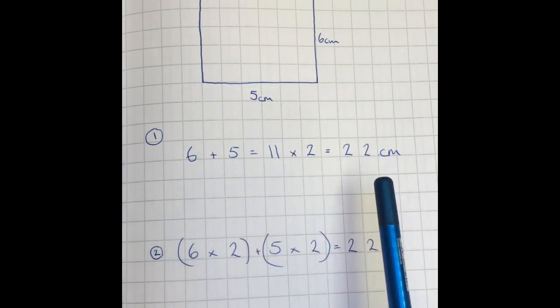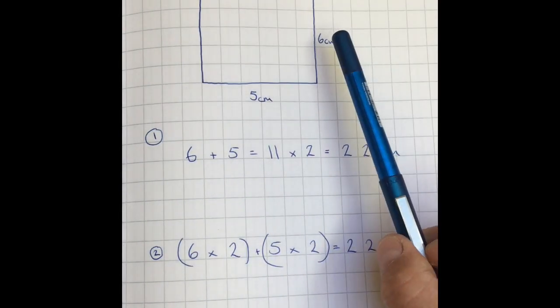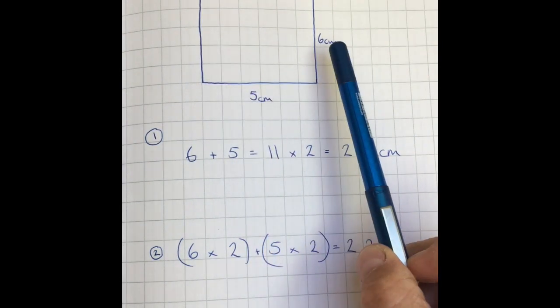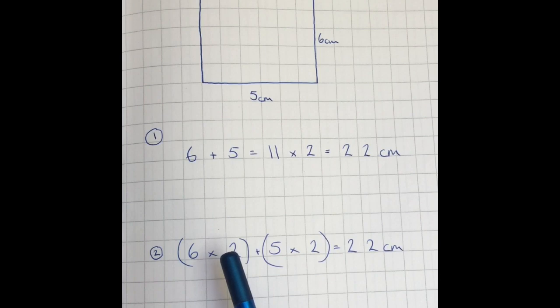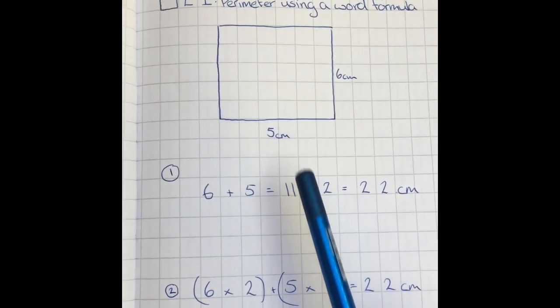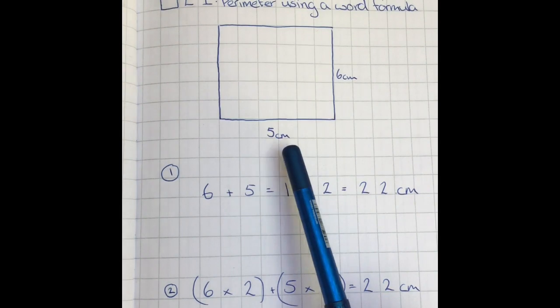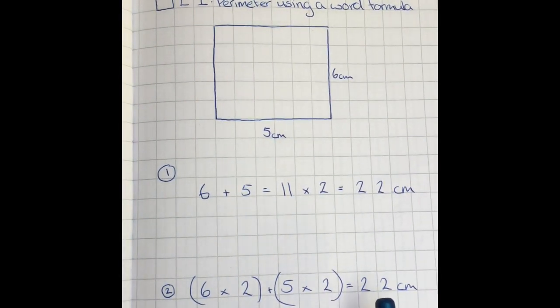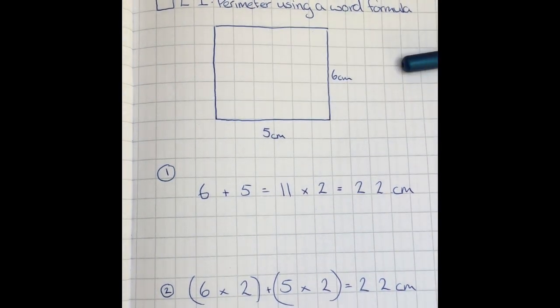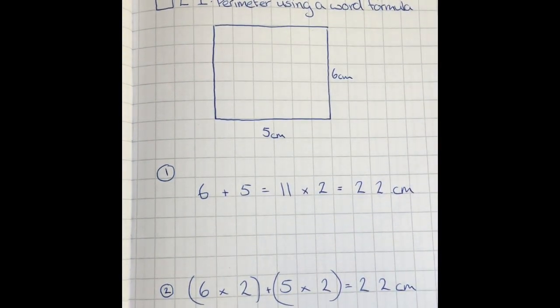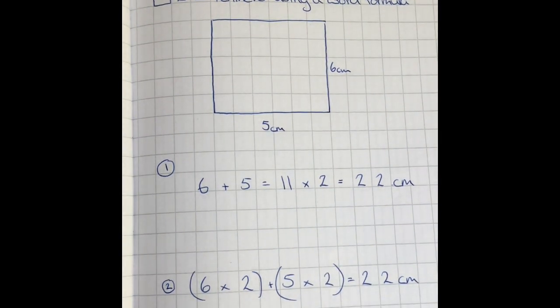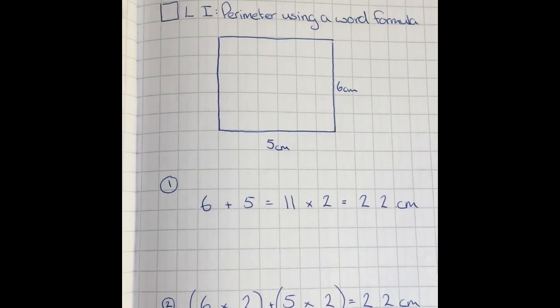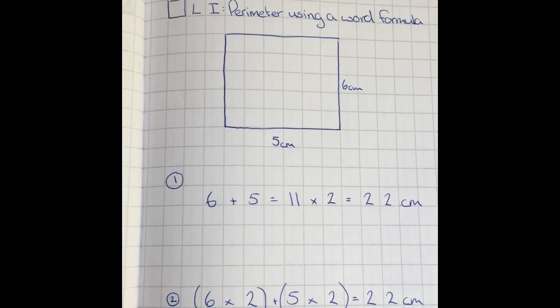The second way: we know there are two of these lengths, so we do six times two to account for both of them. Then we look at the five, and we know there are two of those as well, so five times two. Six times two is twelve, five times two is ten. Add those together, we get twenty-two. This is a little quick word formula that you can use to work out the perimeter of some simple shapes and compound shapes if you split those shapes back up.